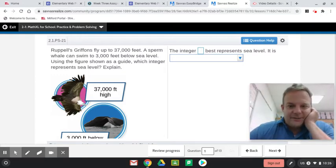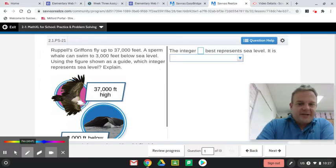This is over integers. Integers are positive or negative whole numbers. Ruppel's griffins fly up to 37,000 feet. A sperm whale can swim to 3,000 feet below sea level. I'm just going to draw a quick picture of this so you can see this.